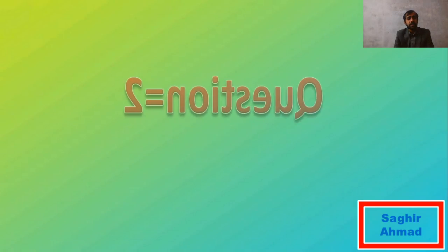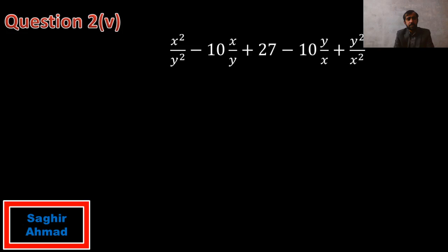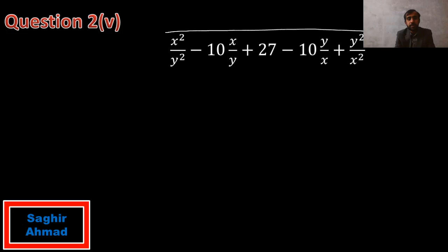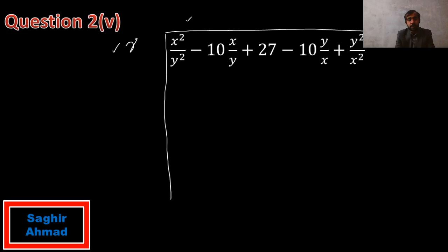Now question number 2, which we solve by the division method. Question number 2 is: x squared over y squared minus 10x over y plus 27 minus 10y over x plus y squared over x squared. We have to find the square root of this question using the division method. I set up the division layout — since the expression begins with x squared over y squared, I place x over y as the first term.